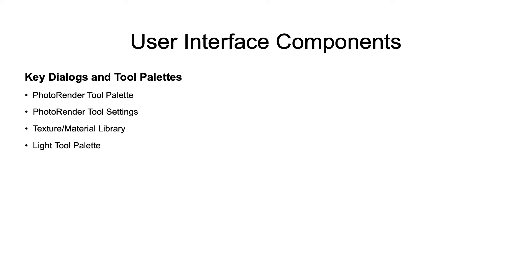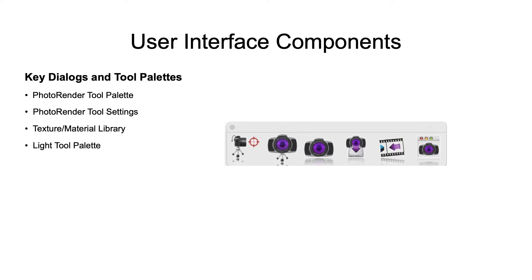Let's review the four key user interface components. The first item is the render tool palette, accessed from the menu bar under Tools > Auto Render. Use this tool palette to render or set up everything about your scene. This tool consists of create camera, render camera, render current view, render to file, recall last render, and render settings.